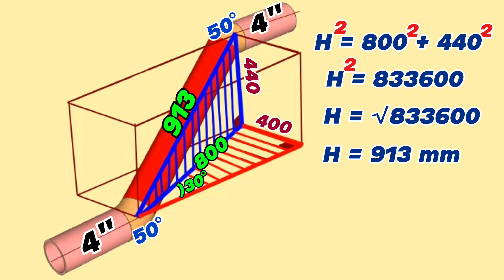So the overall length between the centers of the 50-degree butt-weld cut elbows is 913 millimeters. If we subtract the lengths of the 50-degree cut elbows and the gaps for welding from this total length, we can find the length of the red color pipe section.